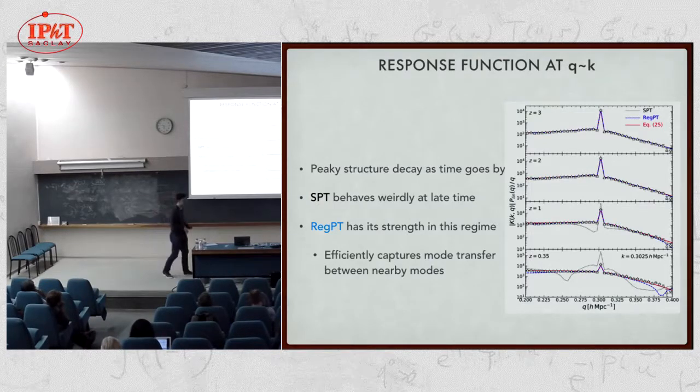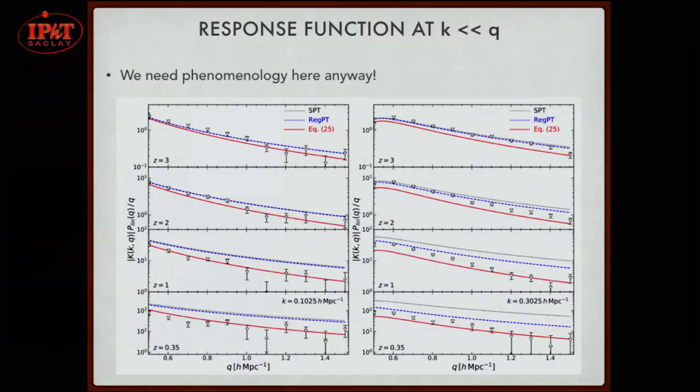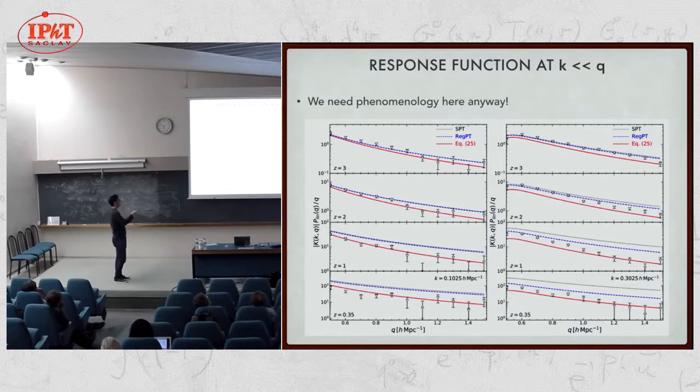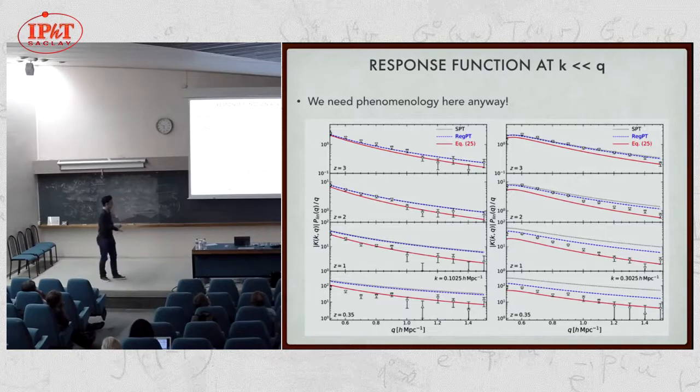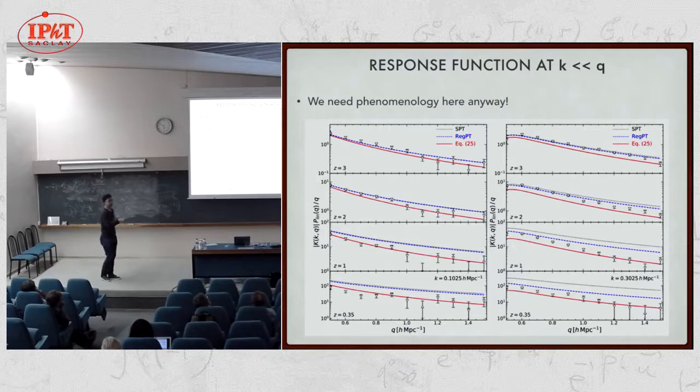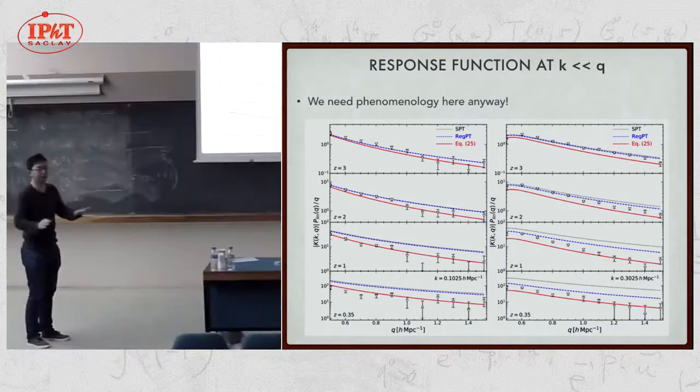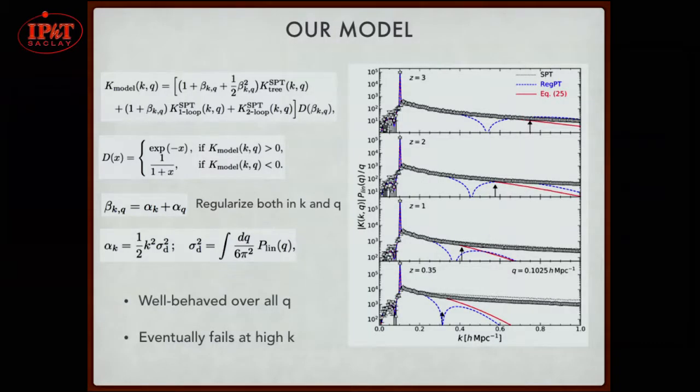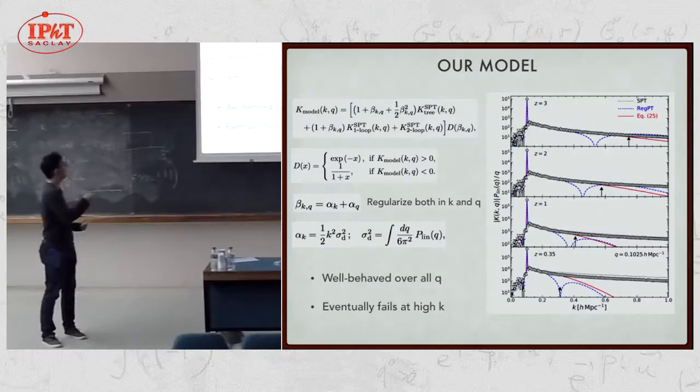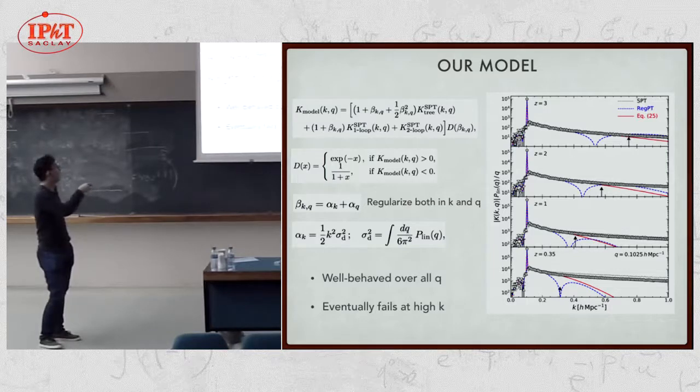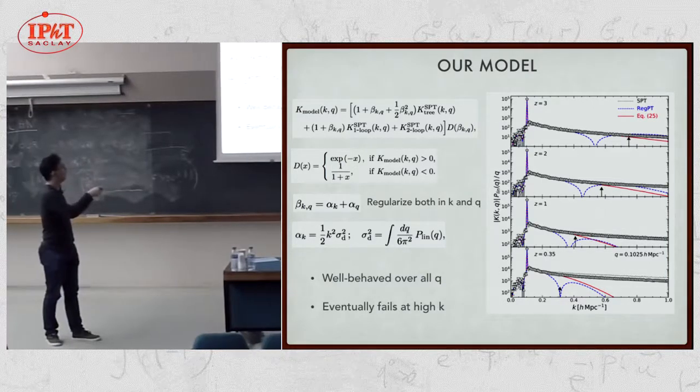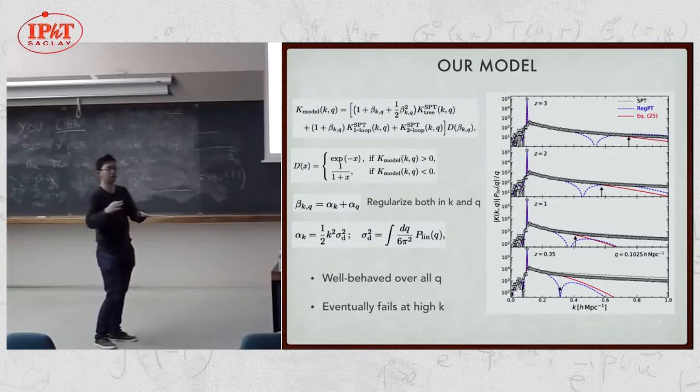As long as the mode transfer is not so large, this kind of technique helps you to have a better prediction. Finally, I go to the other limit, q is much larger than k, small scale perturbation to the large scale perturbation, mode coupling. Then, any lines except this phenomenological red curve, which I will explain in the next slide, renormalized or standard, you cannot explain the simulation data. Here, anyway, perturbative expansion breaks down. You need some phenomenology, whatever. We come up to a very simple answer based on standard perturbation theory. Here, our model prescription is such that we have a standard perturbation theory kernel, tree-level, one-loop, and two-loop. But we also have some counter terms and damping function to phenomenologically regularize the small scale to large scale mode transfer.